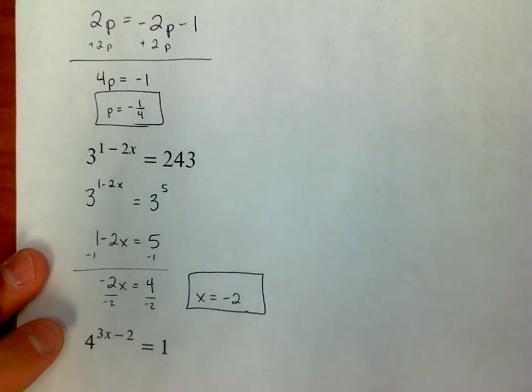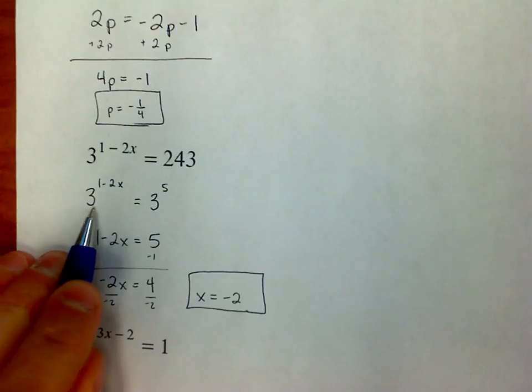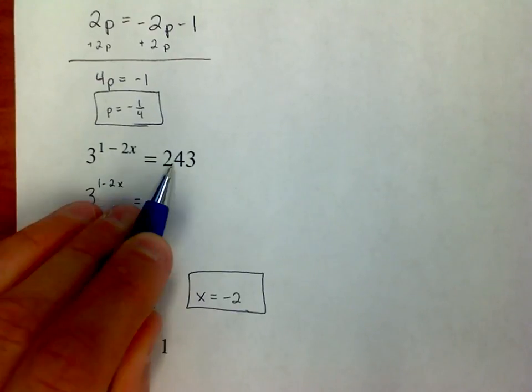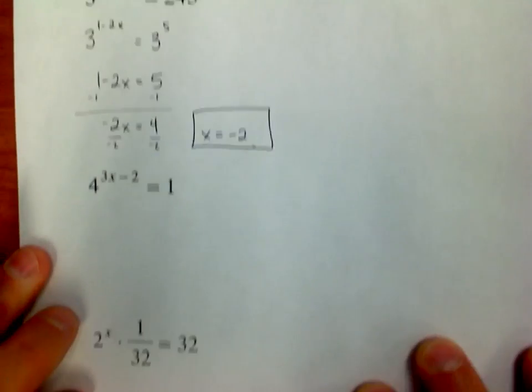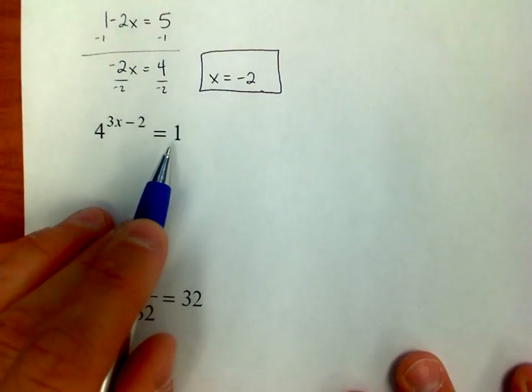Two more examples. Ready? Hopefully that makes sense. So in other words, the trick here is get them both to have the same base. 3 raised to a power, make that 3 raised to a power. What do we do if we have a 1 then?